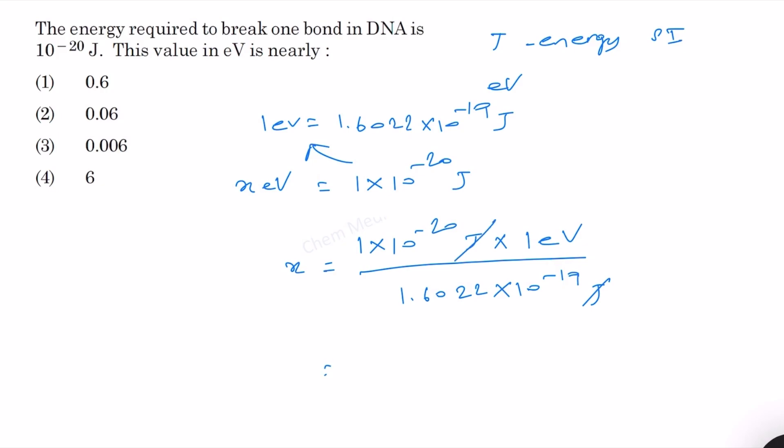This will be 1 by 1.6022. This will become 10 to the power minus 1. When the minus 19 goes up, it will be plus. So what would remain is 10 to the power minus 1. And this means 1 by 10.